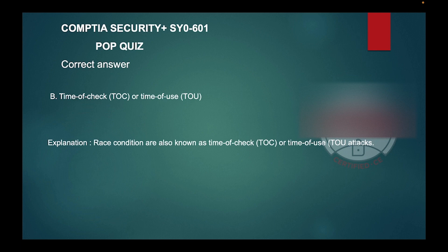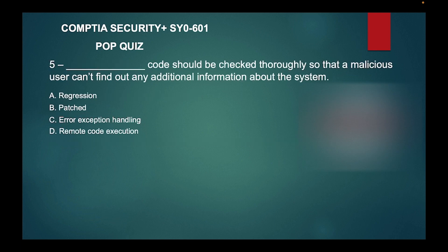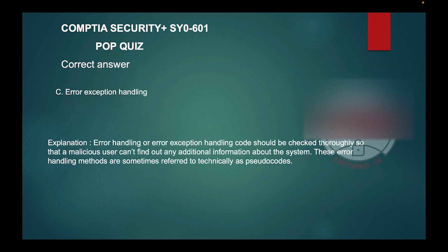Question five: blank code should be checked thoroughly so that a malicious user can't find out any additional information about the system. Is it A: Regression, B: Patched, C: Error exception handling, or D: Remote code execution?